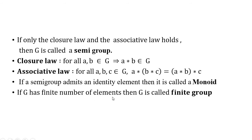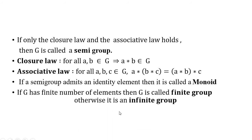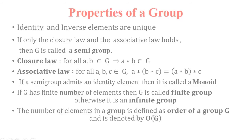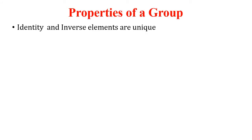If G has a finite number of elements, then G is called a finite group; otherwise it is called an infinite group, meaning the group contains infinitely many elements. The number of elements in a group is defined as the order of the group G, denoted by |G|. Now let us discuss the properties of a group.